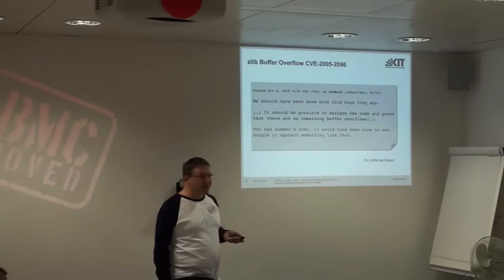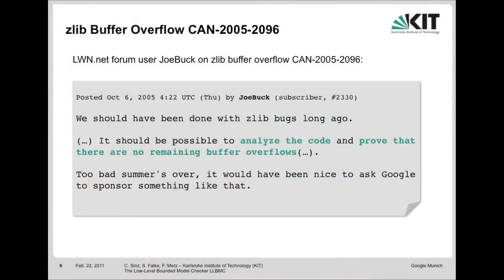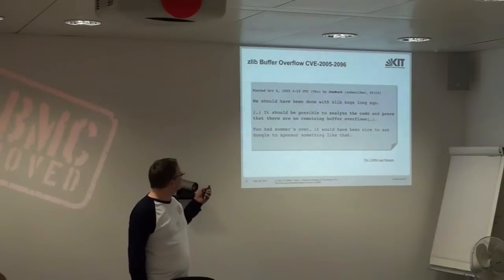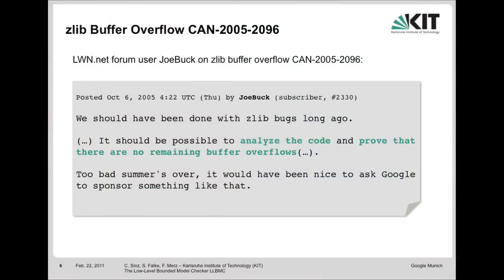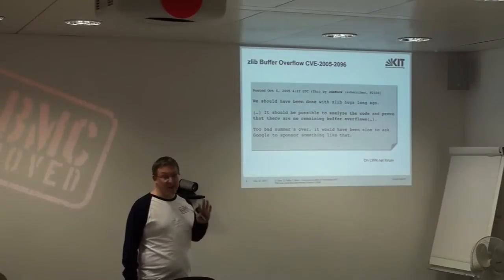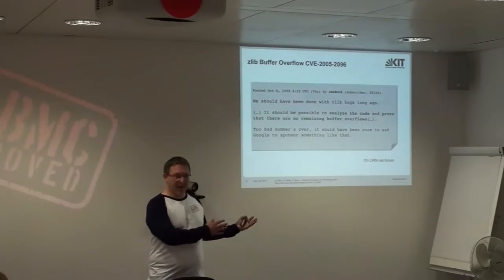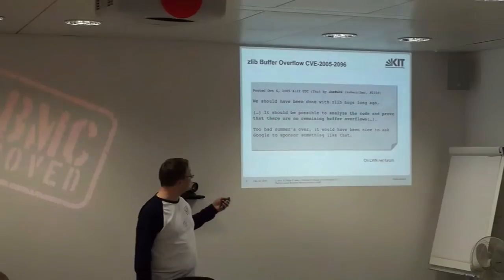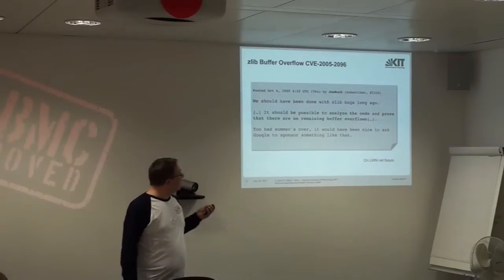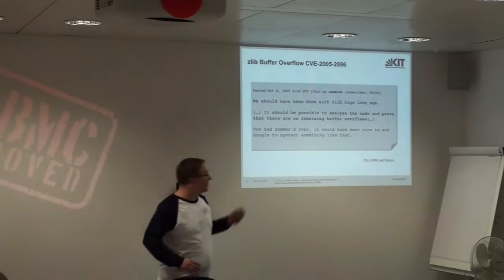Something I found quite interesting was a message posted on the LWN Linux forum in 2005 in reaction to a buffer overflow error in the zlib compression library. The user, with the alias Joe Buck, wrote: 'We should have been done with zlib bugs long ago — this is 10 or 15 years old software. It should be possible to analyze the code and prove there are no remaining buffer overflows.' That's exactly the direction we want to follow — not just saying bugs are a new reality, but doing something about it. He also added, 'It would have been nice to ask Google to sponsor something like that.'